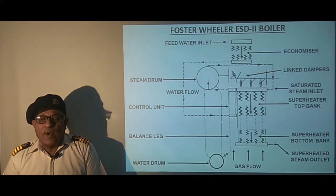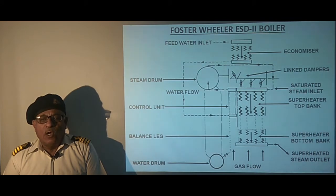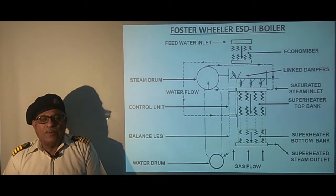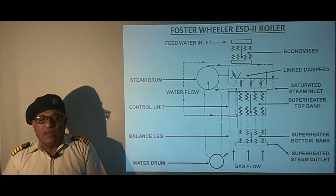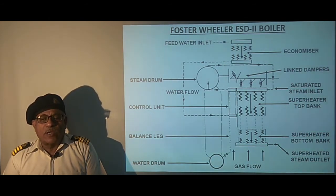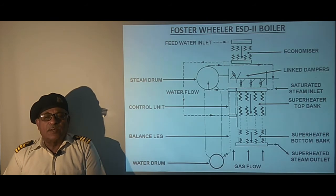Control of final steam temperature is achieved by variation of the gas flow through link dampers. Removal of the air temperator reduced extra steam pipes, pressure drop, and resulted in space saving. The balance leg prevents damage to the control unit by maintaining circulation of water when the boiler is operating at low load with reduced feed requirement, such as during ship maneuvering.